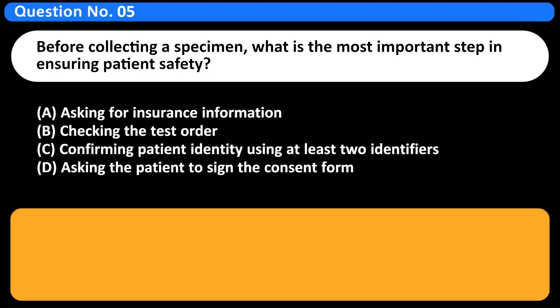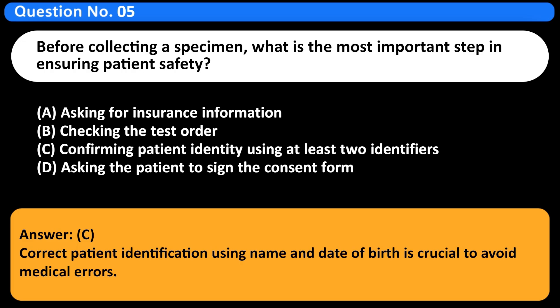Before collecting a specimen, what is the most important step in ensuring patient safety? A. Asking for insurance information. B. Checking the test order. C. Confirming patient identity using at least two identifiers. D. Asking the patient to sign the consent form. Answer C. Correct patient identification using name and date of birth is crucial to avoid medical errors.